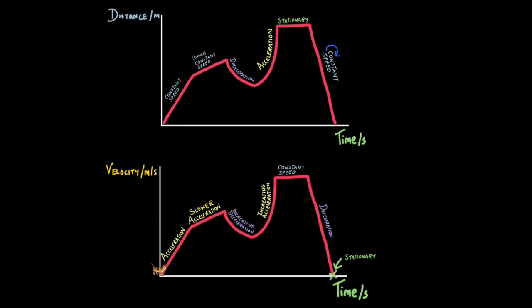Now let's compare a distance-time graph with a velocity-time graph — the same shaped curve, but the interpretation is quite different. On the velocity-time graph the y-axis shows velocity in meters per second, so any increase upward is an increase in speed — an acceleration. A diagonally sloping line is an acceleration; less steep means slower acceleration. A curvy downward line means increasing deceleration — getting slower. A horizontal straight line now means a constant speed, whereas on the distance-time graph it meant stationary. The velocity isn't changing, so time continues but speed stays the same — constant speed.